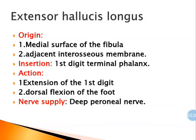The next muscle is extensor hallucis longus. Its origin is the medial surface of fibula and adjacent interosseous membrane. Insertion is into the terminal phalanx of the first digit, that is the big toe. Action is extension of the big toe and dorsiflexion of the foot. Nerve supply is the deep peroneal nerve.